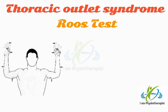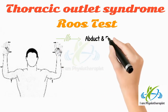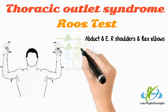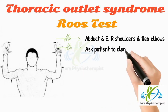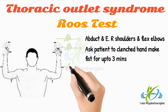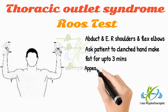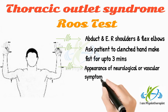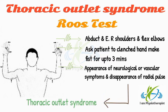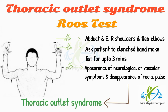Ask the patient to abduct and externally rotate the shoulders and flex the elbows to a right angle. Then ask the patient to clench his hand, making a fist repeatedly and slowly, again and again, for up to 3 minutes. Appearance of neurological or vascular symptoms and early disappearance of radial pulse on the affected side is suggestive of thoracic outlet syndrome.